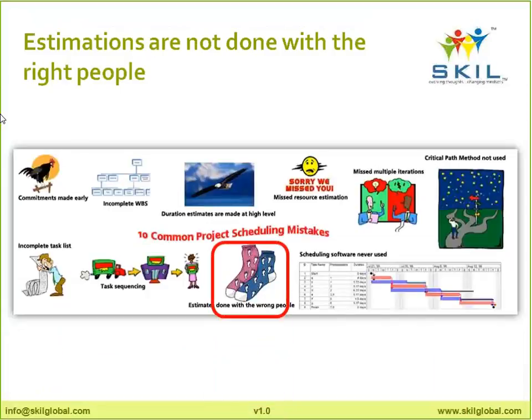The ninth mistake: estimates are done with the wrong people. I was asked by a company head to make a guess on a completion date. I said guesses could be costly — I don't belong to that industry and have never worked in it. How would I know how long a particular task takes? If I guess and he commits to the customer based on that, it's dangerous. He pressed me for a wild guess; I said a wild guess is a bad idea. If I make a wild guess to a senior stakeholder and it turns out wrong, that can cost my job, my career, everything. If you are not the right person, do not estimate.